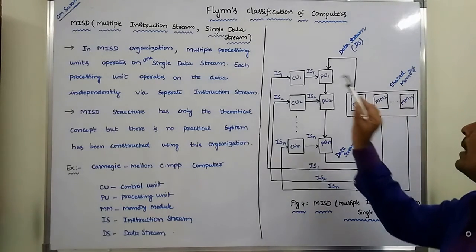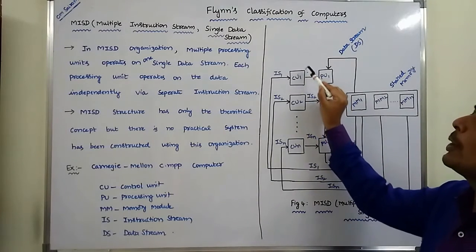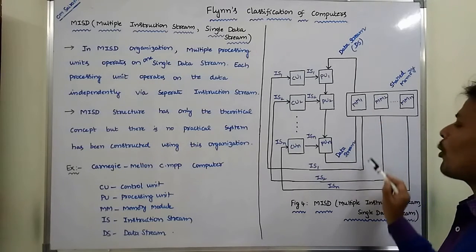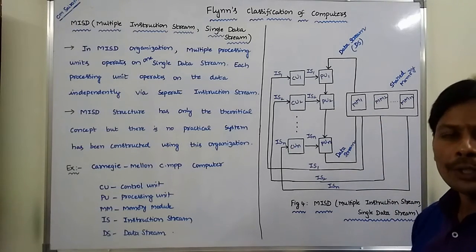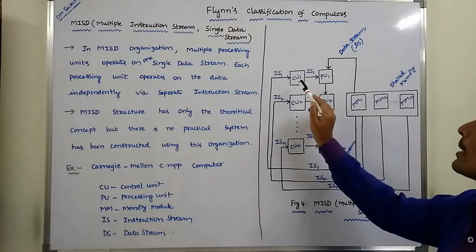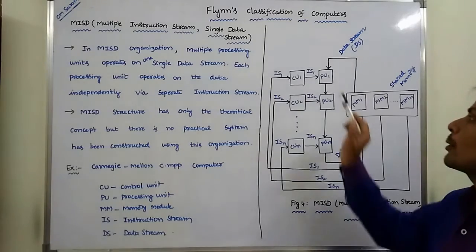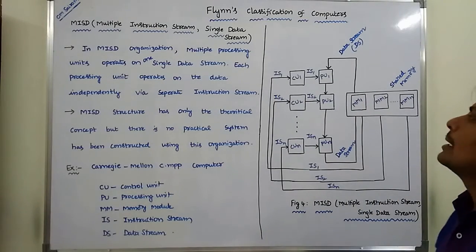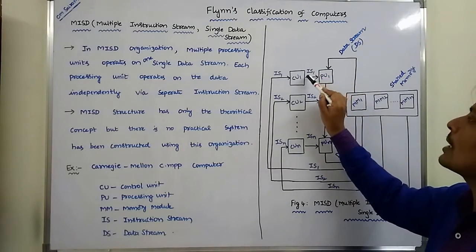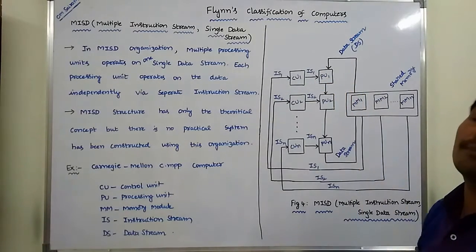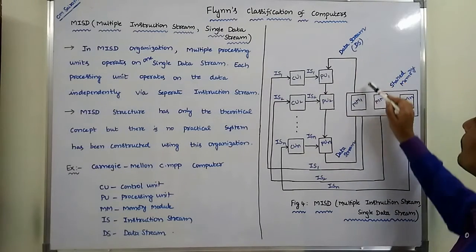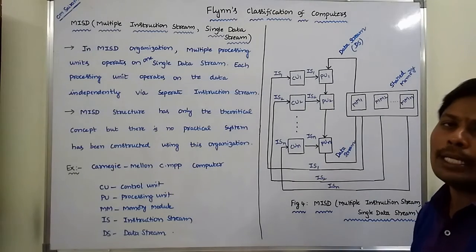Each and every control unit can read the instructions from the corresponding memory module as an instruction stream, and those instructions are sent to the corresponding processing unit. The processing unit can execute the instructions sent from control unit 1 with the data taken from the shared memory unit.